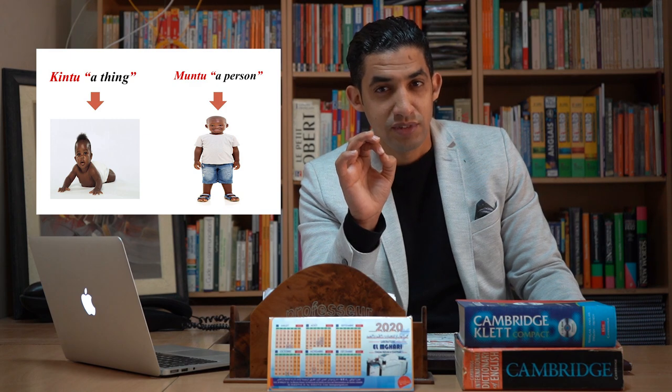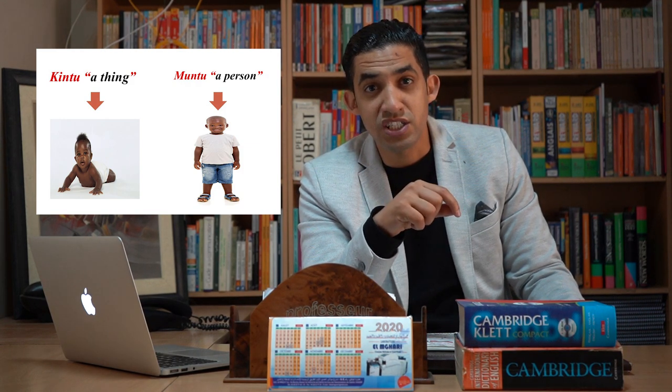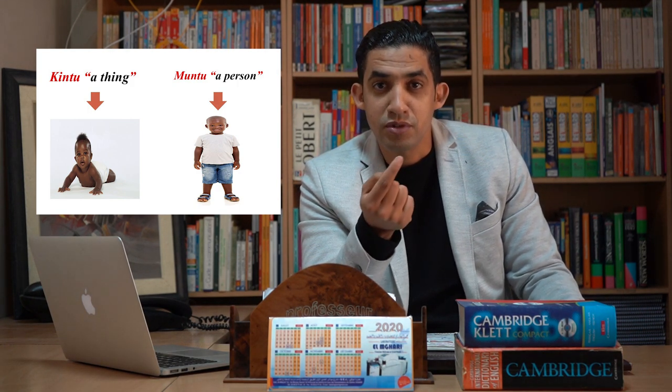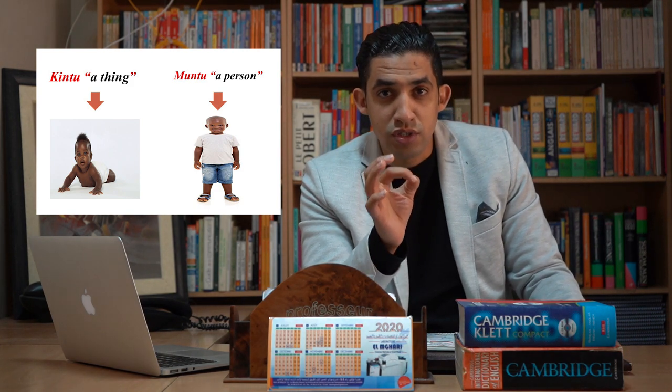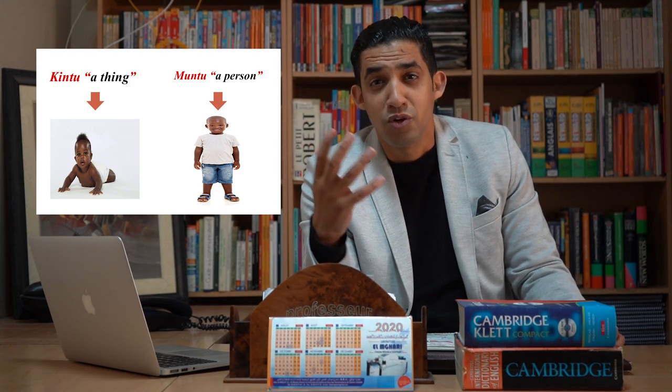Language is everywhere. Possession of language distinguishes humans from other animals. To understand our humanity, one must understand the nature of language. According to some African tribes, a person is referred to as 'kinto' — translated to English as 'a thing' — but when that person starts to speak at least one language, they become referred to as a person: 'muntu.' We all become humans because we all know at least one language.